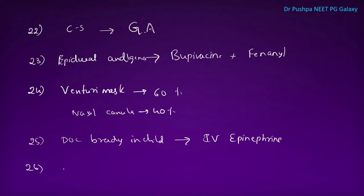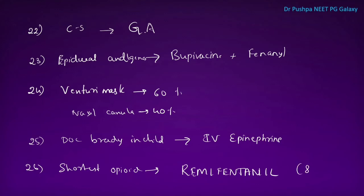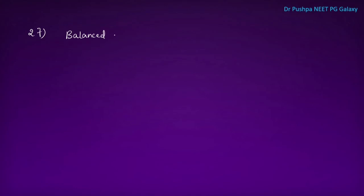The shortest acting opioid is remifentanil, which acts for about 8 to 20 minutes. Balanced resuscitation means restrictive use of fluids and blood products. It has two components: hypotensive resuscitation, where BP is not targeted to reach normal level, and hemostatic resuscitation using blood components to maintain circulating volume.